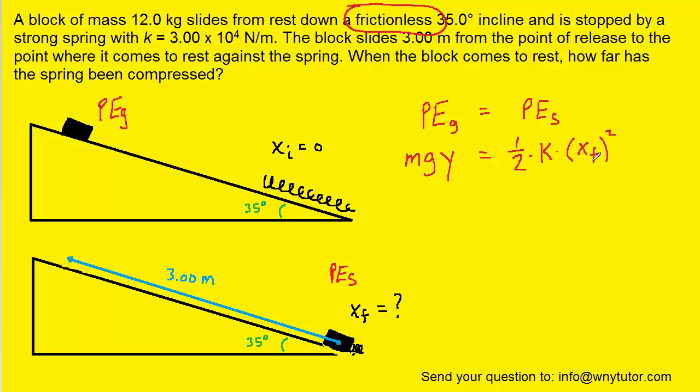And indeed, our goal is to solve for xf, and to begin to do that, we could multiply both sides of the equation by 2, so that we can cancel out the one-half on the right side. We can then divide both sides of the equation by k. And then finally, we can take the square root of both sides, and what that will do is isolate xf.